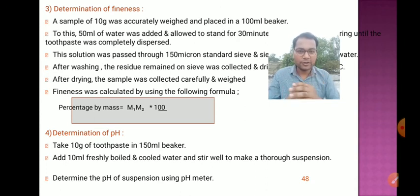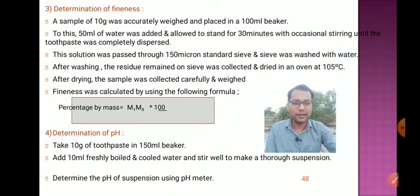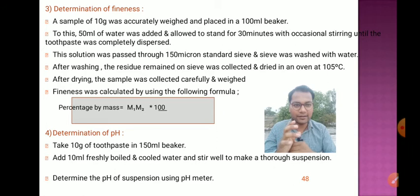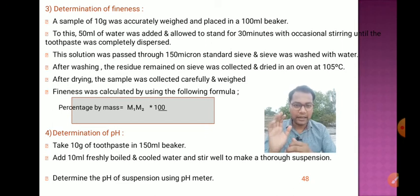The next evaluation test is determination of fineness. A 10 gram sample is accurately weighed and placed in a 100 ml beaker. 50 ml of water is added and allowed to stand for 30 minutes with occasional stirring until the toothpaste is completely dispersed. This solution is passed through a 150 micron standard sieve, and the sieve is washed with water. The residue remaining on the sieve is collected and dried in an oven at 105°C, then carefully weighed.